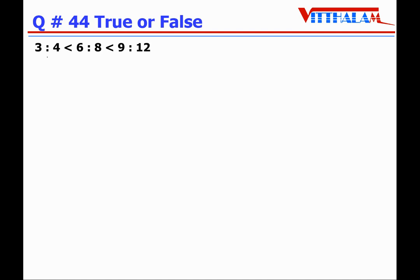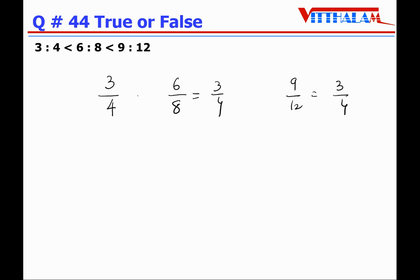Question 44: 3:4 < 6:8 < 3:9 — False. 3:4 is 3/4. 6:8 is 6/8, which simplifies to 3/4 when divided by 2. Similarly 9:12 divided by 3 is also 3/4. So all are equal, the less-than sign is wrong, therefore it is False.